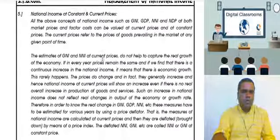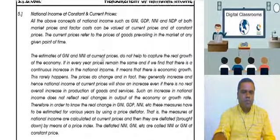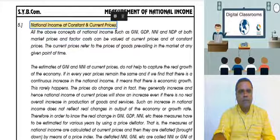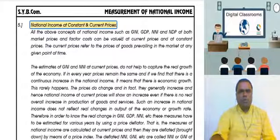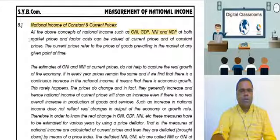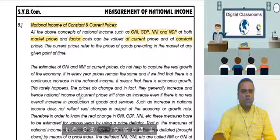Now, as you can see on your screen, we come across National Income at Constant Price and National Income at Current Price. All the concepts we read — GNI, GDP, NNI, NDP — can be calculated at both market price and factor cost, but they can also be valued at current prices and constant prices.